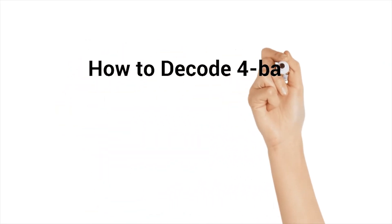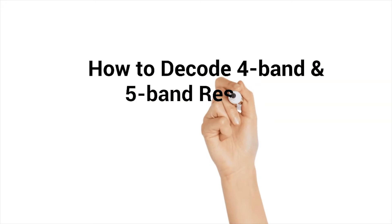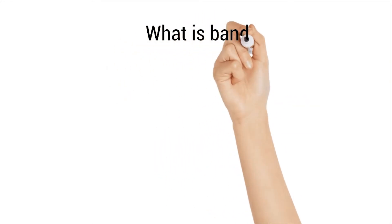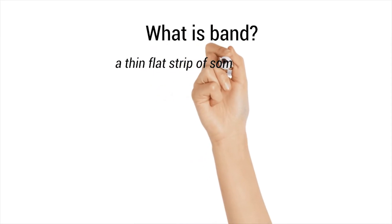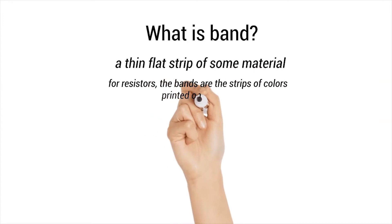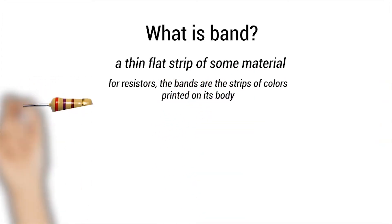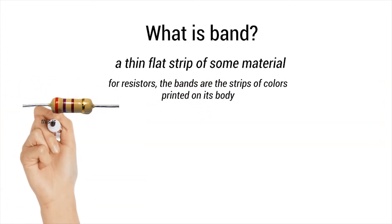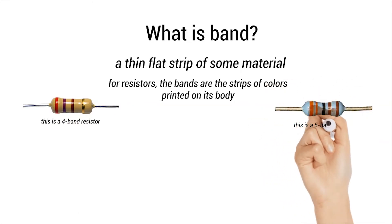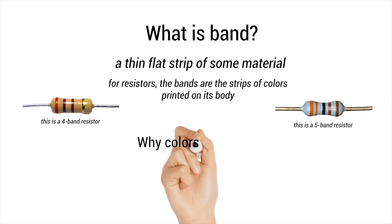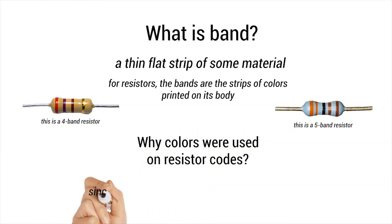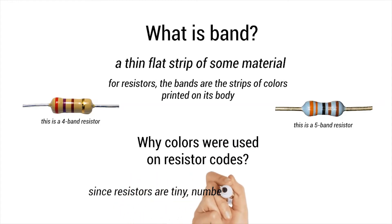How to decode four-band and five-band resistors. A band is a thin, flat strip of some material. For resistors, the bands are the strips of colors printed on its body. This is a four-band resistor. This is a five-band resistor. Colors were used on resistor codes because resistors are tiny and numbers won't fit on them.